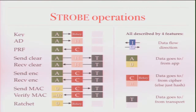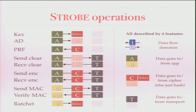The main insight or innovation of Strobe is that the way these operations are described and performed can be determined from basically just four features: does data go to or from the application side, does data go to or from the cipher (is the key changed or is it used to encrypt anything), and does data go to or from the transport. That's sort of four features — like four bits, kind of. I'll show you how this can be used to implement the operations according to a relatively simple pattern.